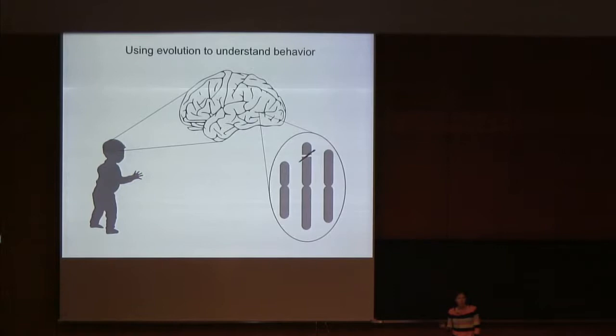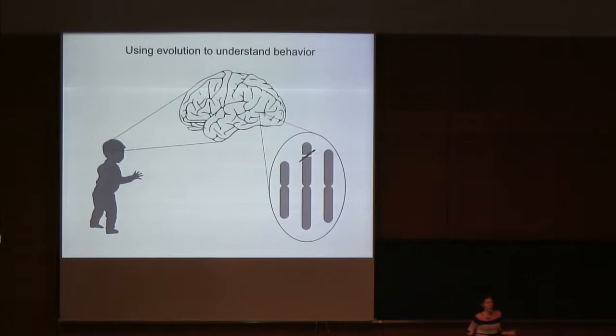We look to see how these changes — these knockouts and silencing events — affect circuit activity and behavioral output. In my lab, we take a complementary approach: instead of generating artificial perturbations, we rely on natural perturbations that have accumulated over the course of evolution.